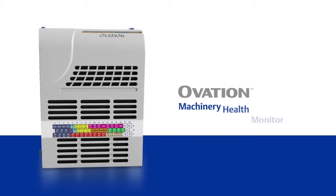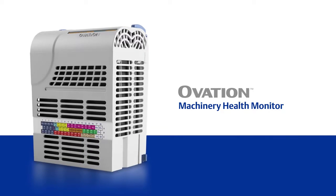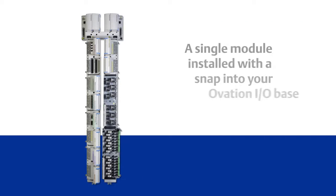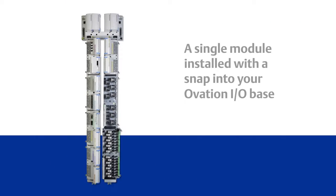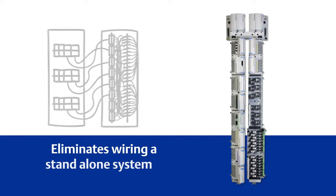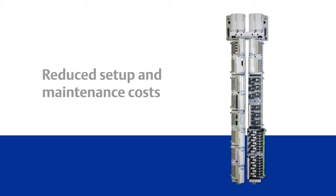The Ovation Machinery Health Monitor is fully and seamlessly integrated into your Ovation distributed control system. A single, simple module installed with a snap into your Ovation IO base eliminates the wiring and commissioning of a standalone system, meaning reduced setup and maintenance costs.